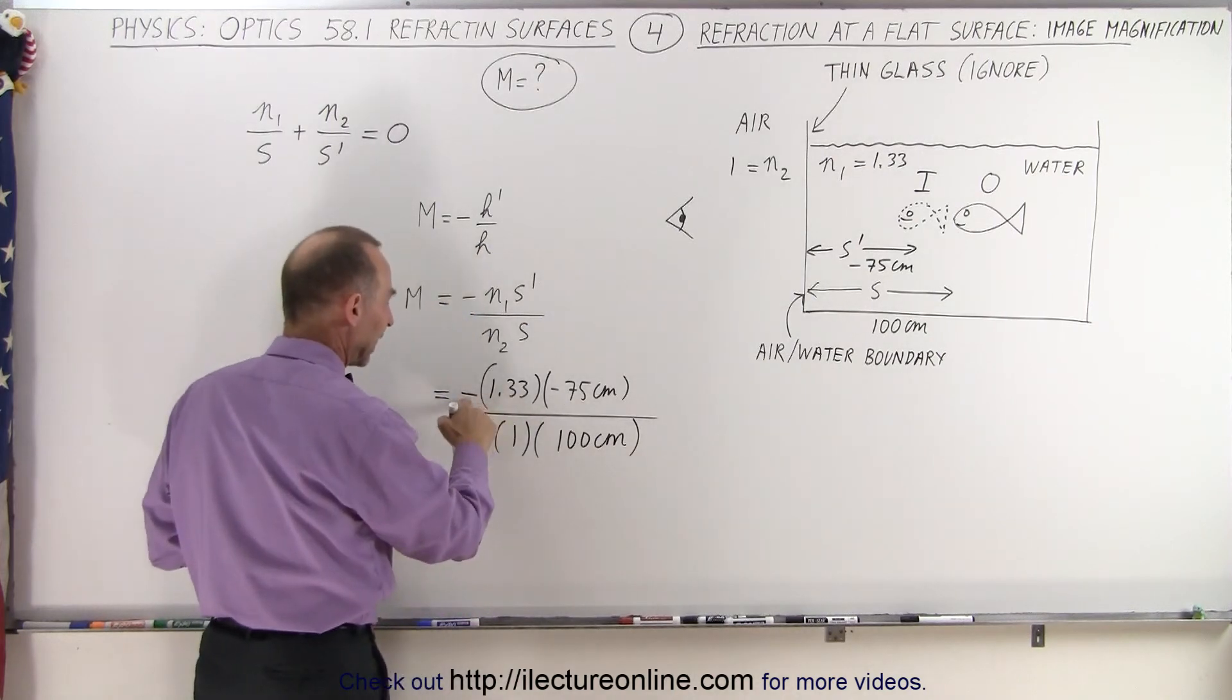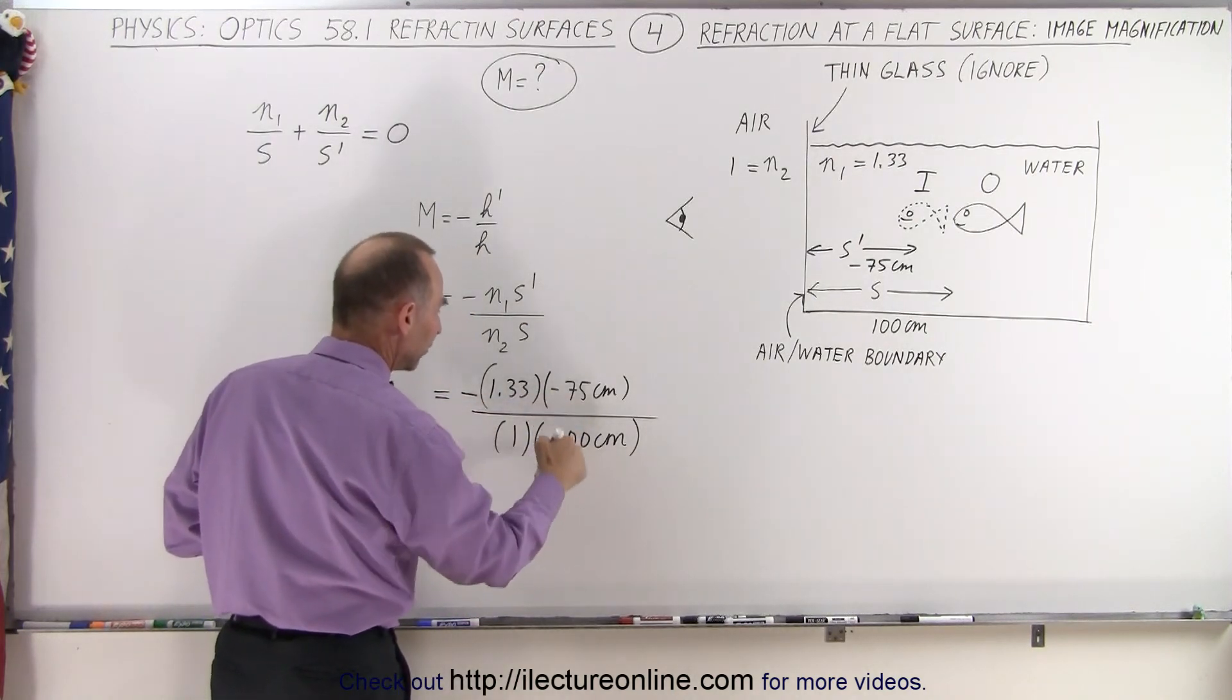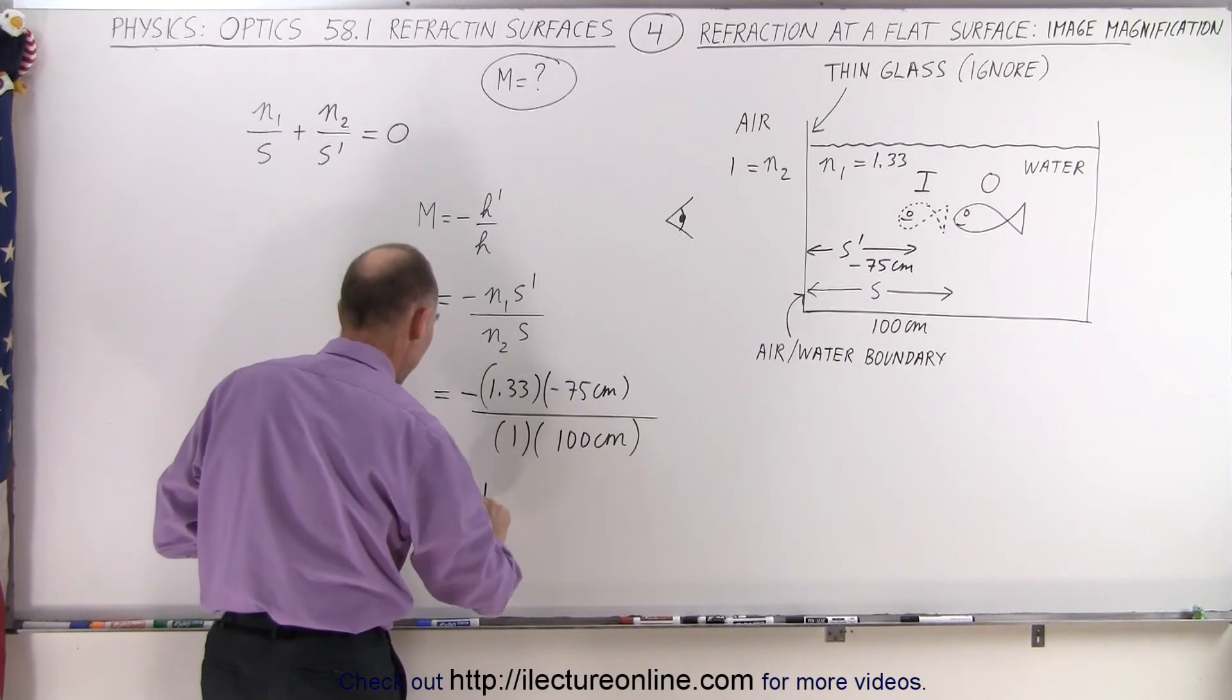And notice, sure enough, the negative cancels out. This times this is 100 divided by 100. That's equal to a positive 1.